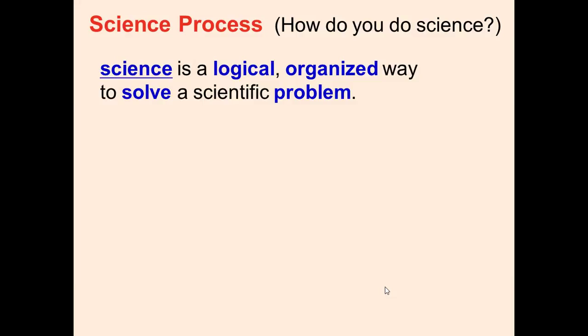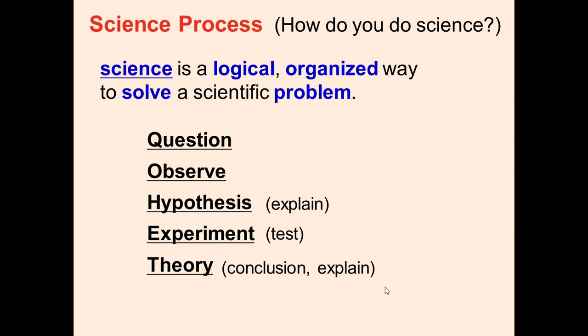I'm sure all of you know about the scientific process from those pesky science fairs in middle school. Science is a logical, organized way to solve a problem. The scientific process has about five steps. First, ask a question. Then make observations or do some research. After observing, make a hypothesis or possible answer to the question. Then perform an experiment to test it, and afterwards you can reach a conclusion and establish a theory.